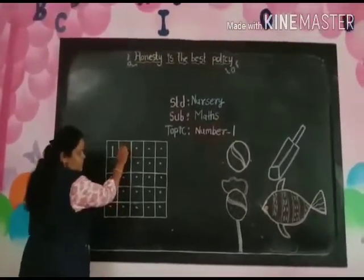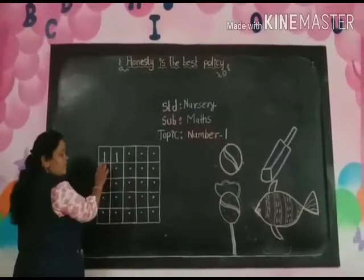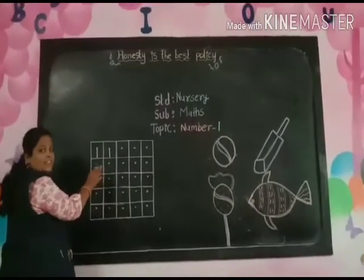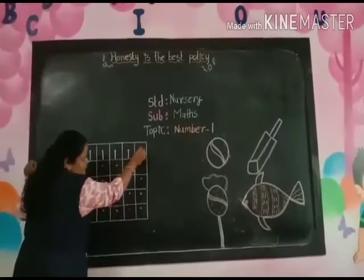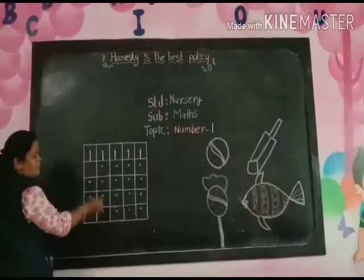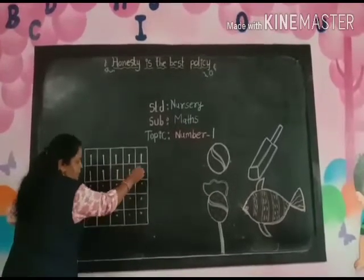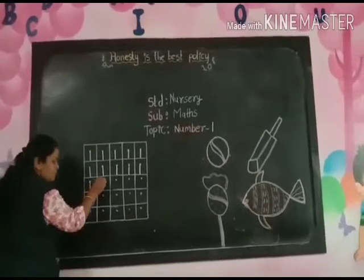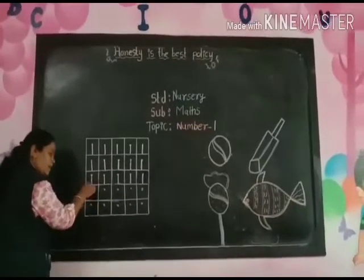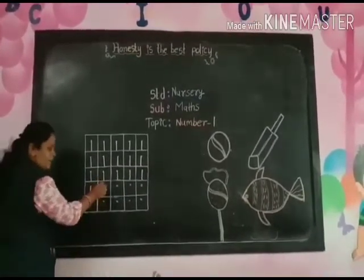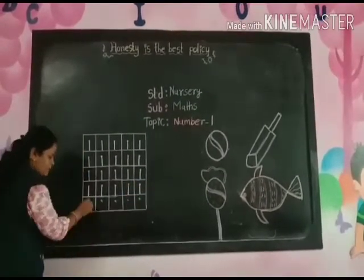Do again. Put your pencil on the dot and write number 1 — like the standing line. How to write number 1, like the standing line.